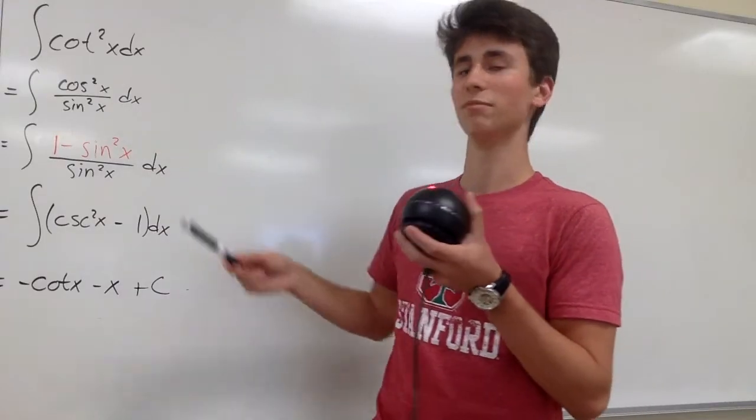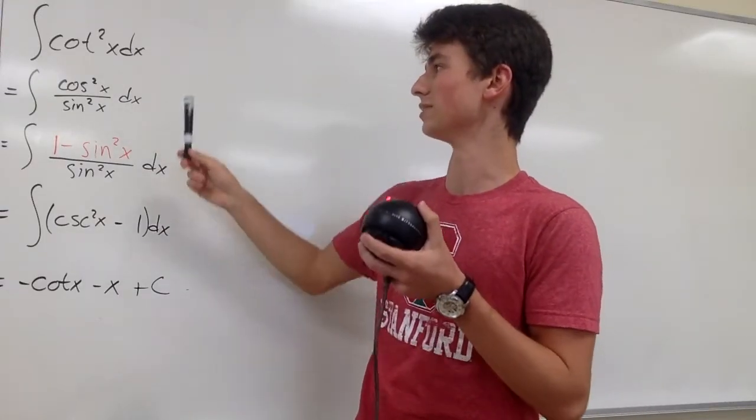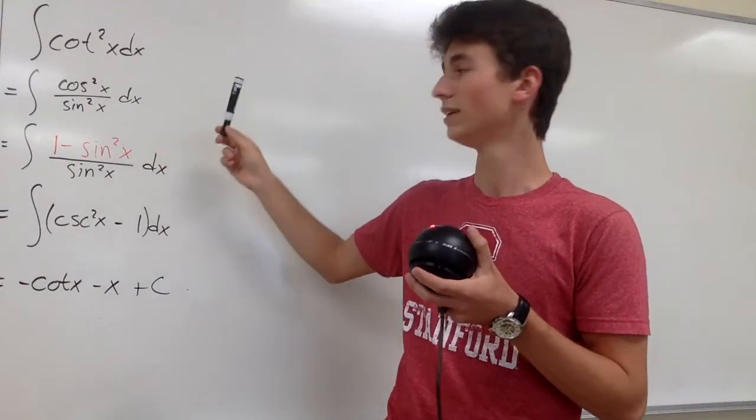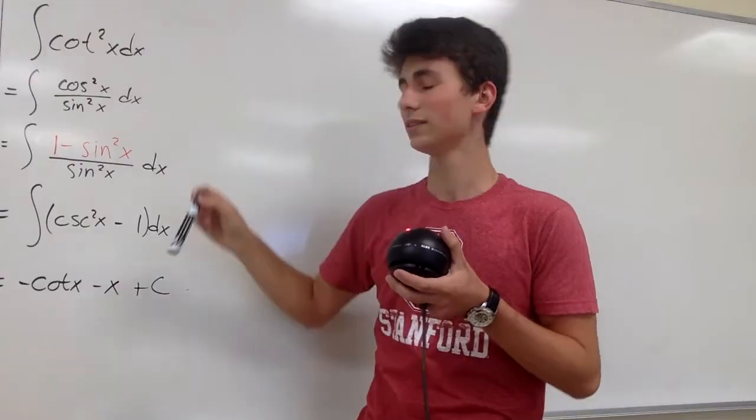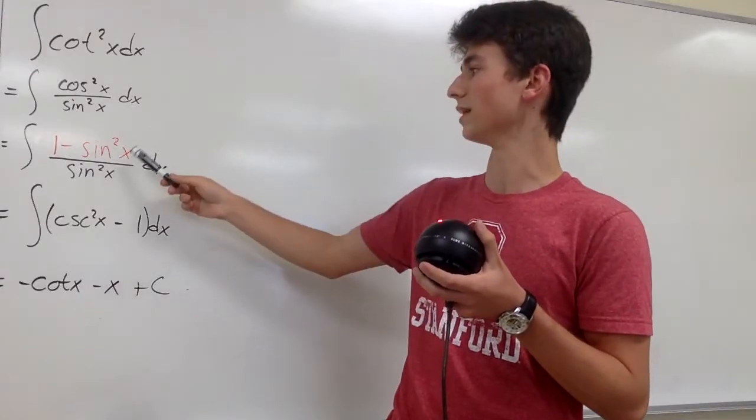We're going to start by splitting cotangent squared into cosine squared divided by sine squared dx. And we can use the identity that cosine squared of x is equal to 1 minus sine squared of x.